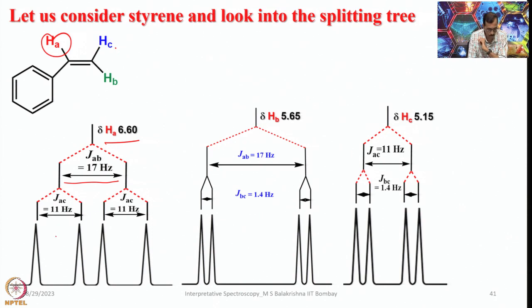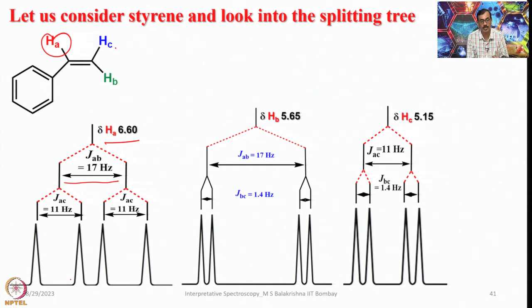In the styrene spectrum, Ha appears around 6.72, Hb around 5.76, and Hc around 5.25; all aromatic protons appear around 7.3–7.4. Although it may appear like a doublet, each vinyl signal is actually a doublet of doublets, showing 4 lines. For Ha: first split by the trans coupling of 17 Hz, then each line further split by the cis coupling of 11 Hz, giving doublet of doublets.